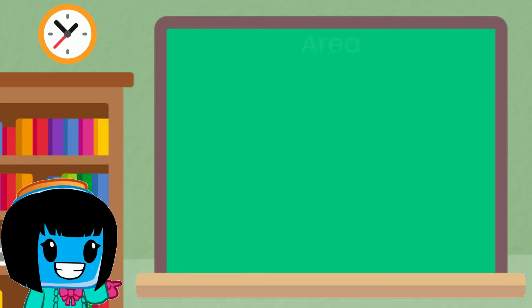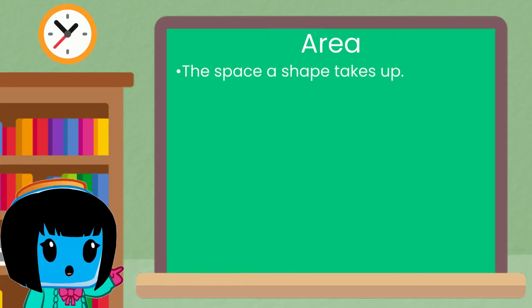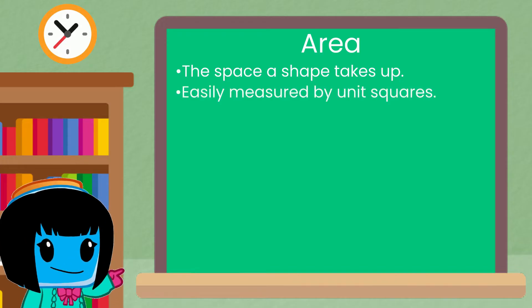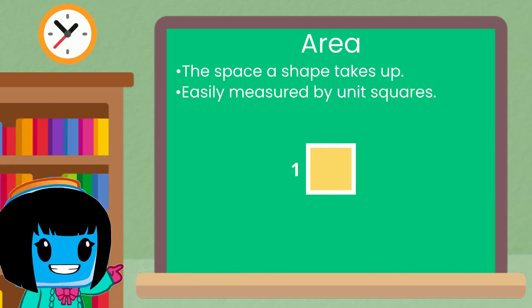First let's recall what the area is. Area is the space a shape takes up. The easiest way to measure area is by unit squares, a square with a side length of one unit.